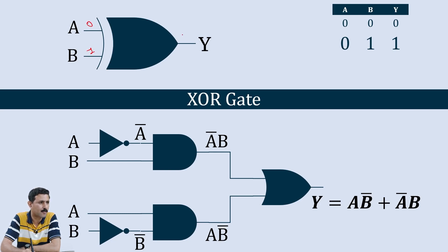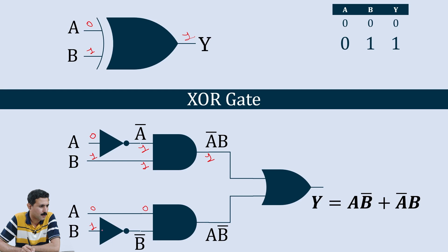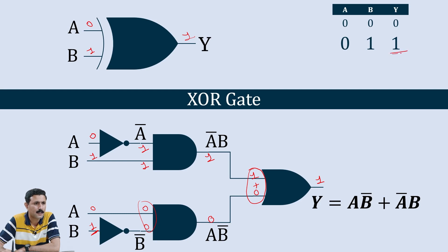Now with inputs A = 0 and B = 1, the output should be 1. The NOT gate on A gives Ā = 1. B is directly 1. AND of 1 and 1 gives 1. A is 0, the NOT gate on B gives B̄ = 0. AND of 0 and 0 gives 0. The OR gate has inputs 1 and 0, so 1 + 0 = 1. The output is 1, which matches the truth table.